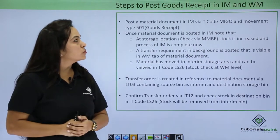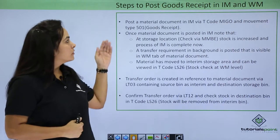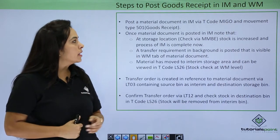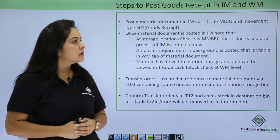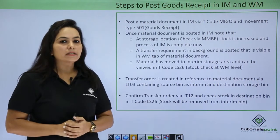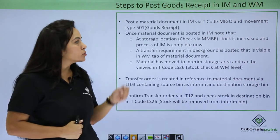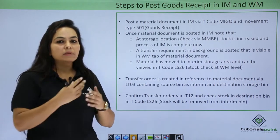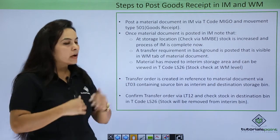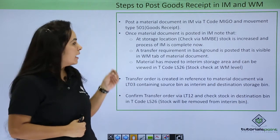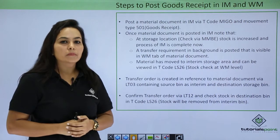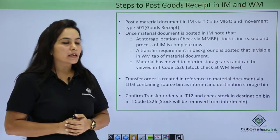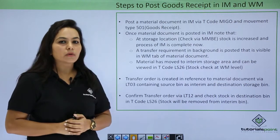Let's see the steps to post Goods Receipt in IM and WM. First, we will post a material document in IM via transaction code MIGO and movement type 501. Once the material document is posted in IM, the stock at storage location will be increased — our IM work is complete. A transfer requirement will be posted in the background and it will be visible in the WM tab of the material document. The material has moved to the interim storage area and we can check stock in LS26.